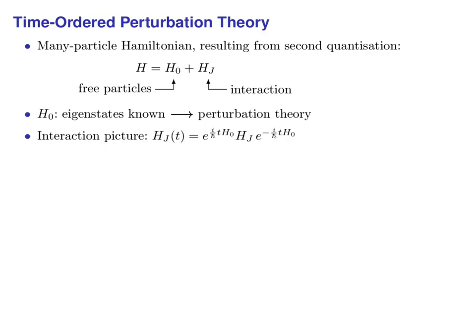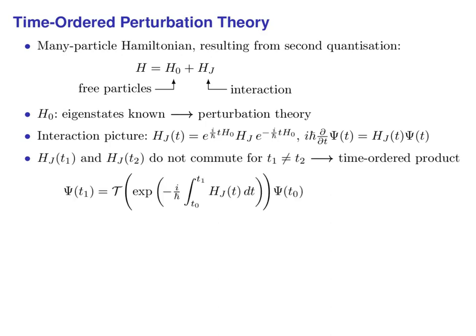We work in the so-called interaction picture, where the interaction Hamiltonian is time-dependent and its time evolution is governed by the free Hamiltonian. We let the wave function evolve under this time-dependent interaction Hamiltonian. The interaction Hamiltonian doesn't commute with itself for different times, so when we calculate a time evolution operator from it, we cannot simply put its integral over time inside an exponential — we need to apply a time-ordered exponential.